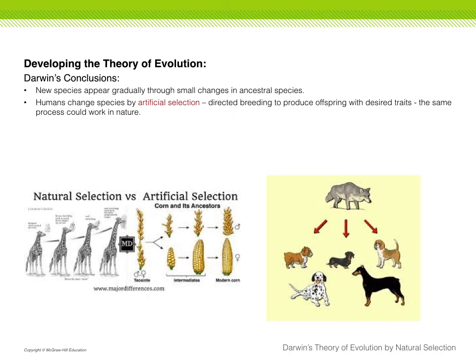Darwin returned to England in 1835 and spent some time thinking about all that he had seen on his voyage. One of the conclusions he drew was that organisms appear to change over time — new species appear gradually from ancestral species. He also decided that the principles of artificial selection used in agriculture, where people breed cows or horses for a certain body type and look, could apply to nature, and that there could be this natural selection.